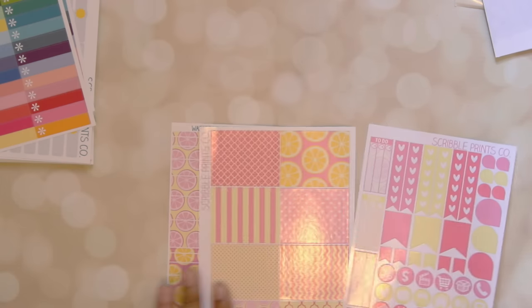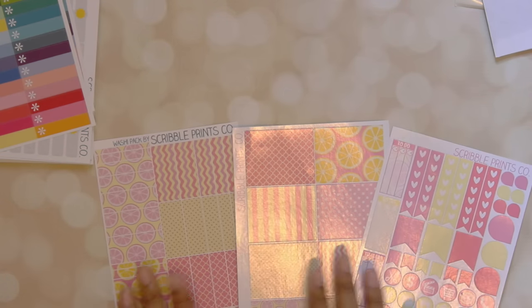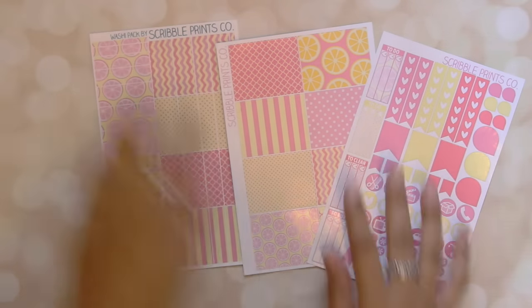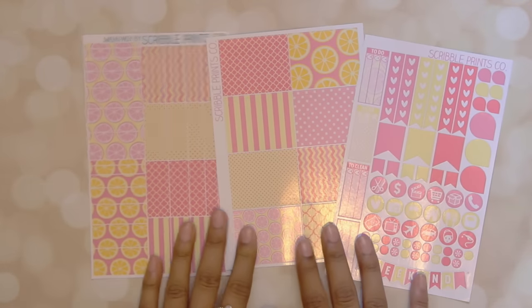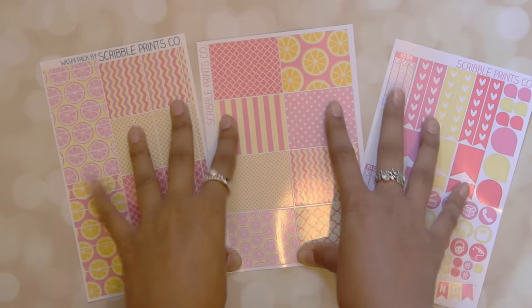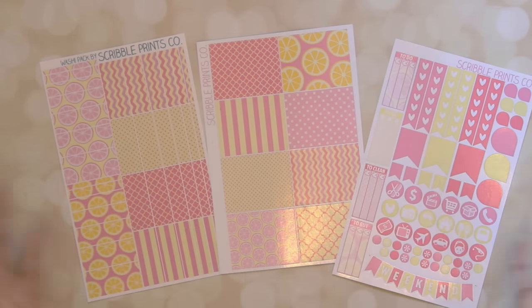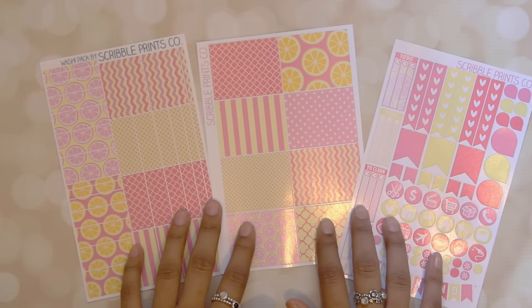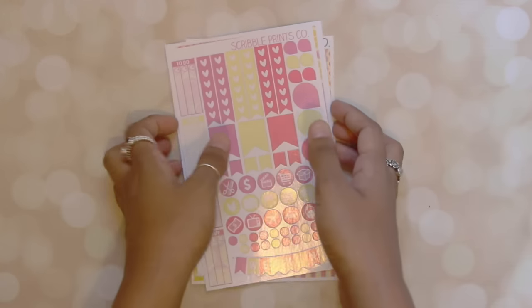So firstly, I did pick up her pink lemonade set. This is her pink lemonade set and it's so cute. Obviously I won't be doing this spread anytime soon because pink lemonade is super summery. And I bought this for my vertical planner because I already did a pink lemonade spread in my horizontal. So this will be used in my vertical.